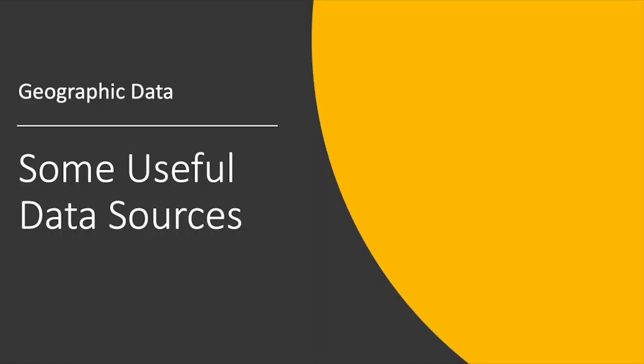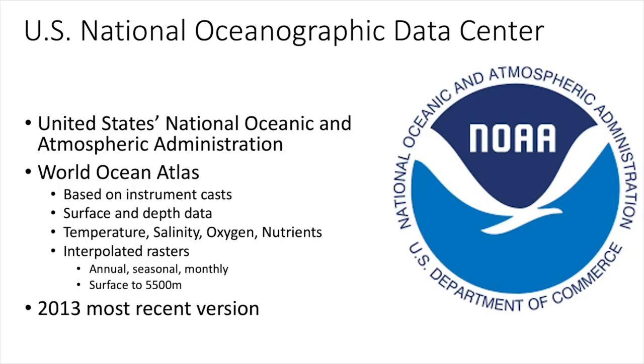So as I said, I'm going to talk about some useful data sources now and give you a little bit of a tour of that. So the first data source, which is a data source that I use a lot, is the U.S. National Oceanographic Data Center. And this is based at the United States National Oceanic and Atmospheric Administration called NOAA. They produce a World Ocean Atlas, which is based on instrument casts. So you remember that map I showed you? That's the map for the World Ocean Atlas data set.